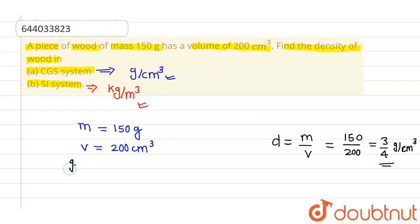Now when we want to convert gram per centimeter cube into kilogram per meter cube, we have to multiply it by 1000, because 1 kilogram per meter cube equals 1000 gram per centimeter cube.